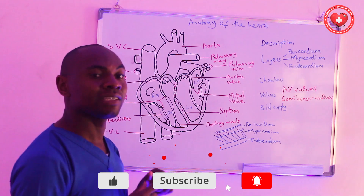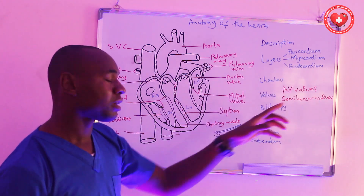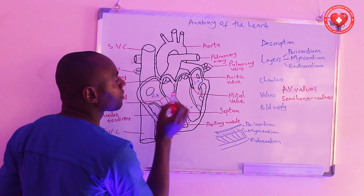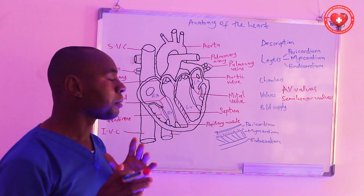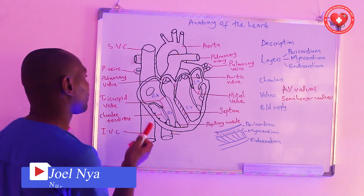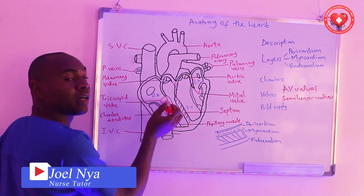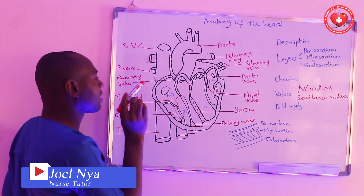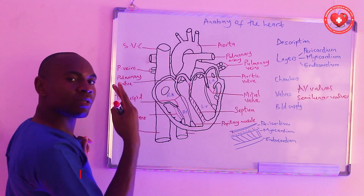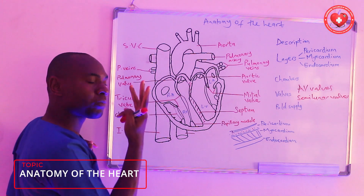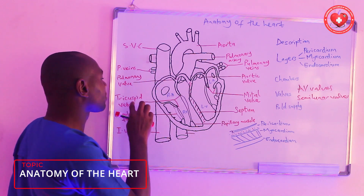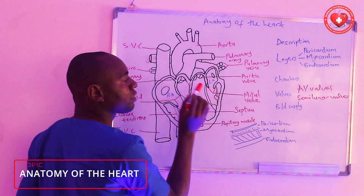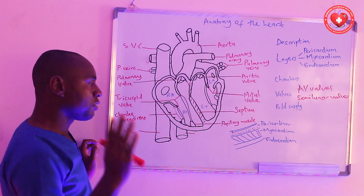The AV valves are the atrioventricular valves — meaning they are located between the atrium and the ventricles. For the right side, we call this valve the right atrioventricular valve, or tricuspid valve. It is called tricuspid because the valve is made up of three leaflets or three cusps. The left atrioventricular valve can either be called the mitral valve or the bicuspid valve.